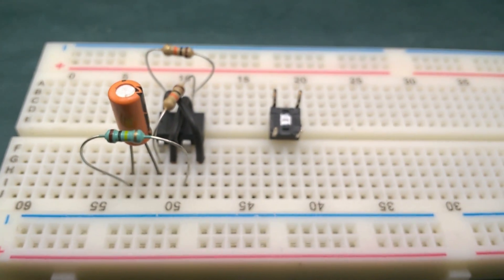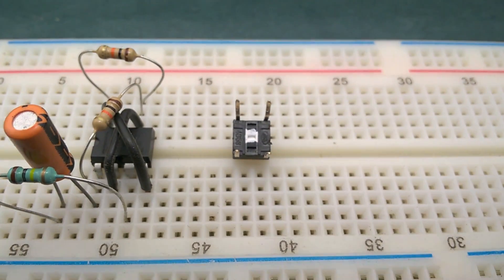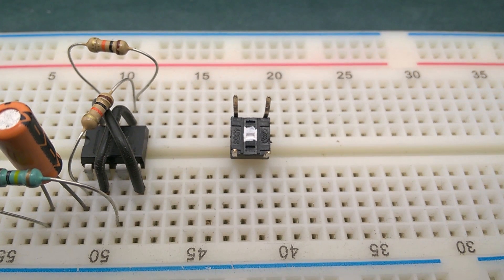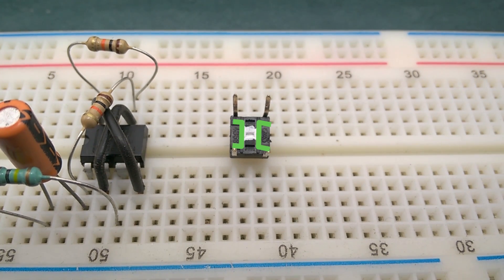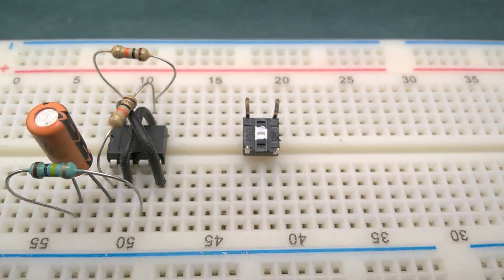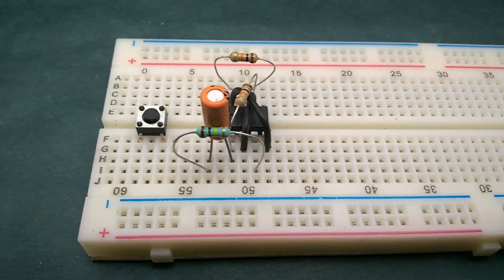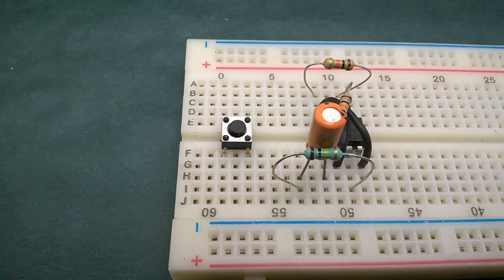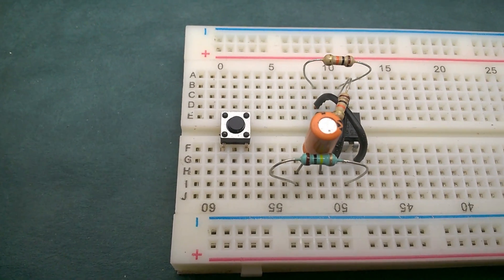Now, if you look at rear side of the pushbutton switch, you will find 2 lines and the pair of terminals along each line are interconnected. Place pushbutton switch on the breadboard so that the pins connected to each other are aligned vertically.